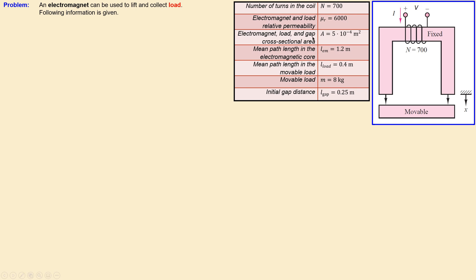The electromagnet, load, and air gap have a cross-sectional area equal to each other, which is 5 times 10 to the power minus 4 square meters. The mean path length in the electromagnetic core is 1.2 meters, and the mean path length in the movable load is 0.4 meters. The movable load has a mass of 8 kilograms and the initial gap distance is 0.25 meters.